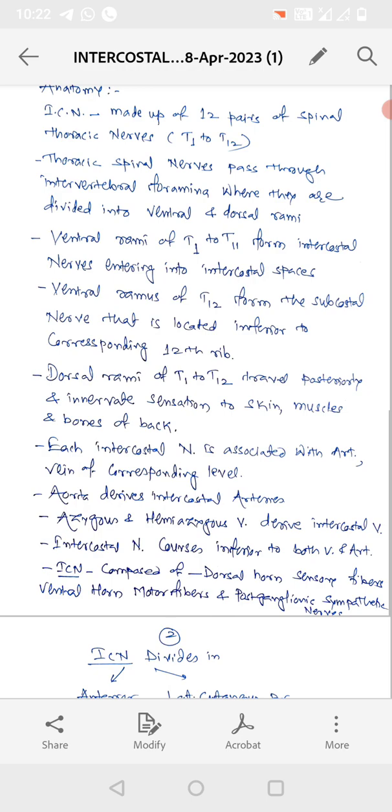Ventral rami of T12 forms the subcostal nerve that is located inferior to the corresponding 12th rib.